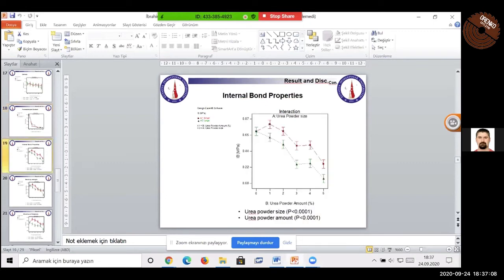Internal bond properties. Based on the results, both UREP powders size and amount had a significant effect on the IB strength values. With the adding of UREP powders, the IB values were reduced. Small size UREP powders group provided better IB properties than the large one. The boards produced with small size UREP powders group satisfied standard requirements for IB properties except the five percentages of that group. For large-sized groups, while one percent and two percent used groups were satisfied, others were not. You can see from here. The standard value is 0.35 megapascal for the IB test.